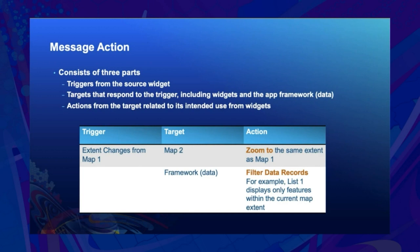The trigger is a message from a source widget, like Extent Changes from Map 1. The target is the responder, which could be a widget or data. If Map 2 is the target, the action could be zooming to the same area as Map 1. If data is the target, the action could filter data records, causing the List widget to display only features within the current map extent automatically.